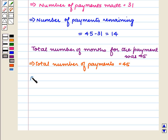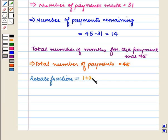So that means the rebate fraction is equal to the sum of digits for number of payments remaining, that is 1 plus 2 plus 3 plus 4 and so on plus 14, upon the sum of digits for total number of payments.